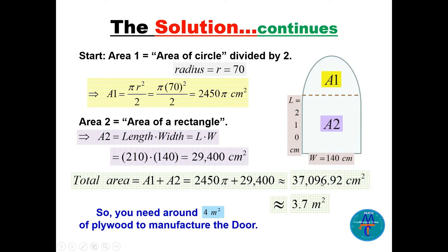This is almost 3.7 m². So you need around 4 m² of plywood to manufacture the required door.